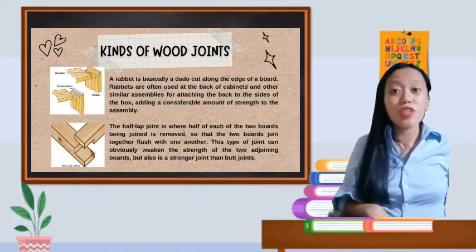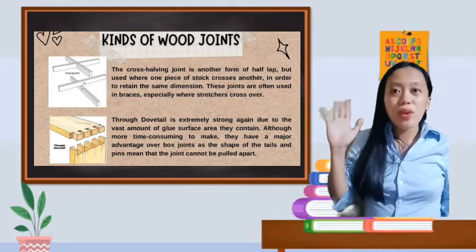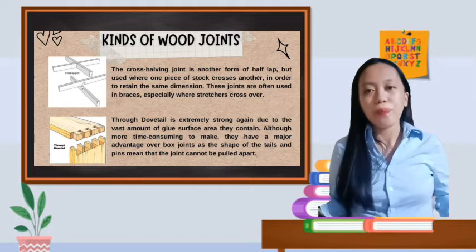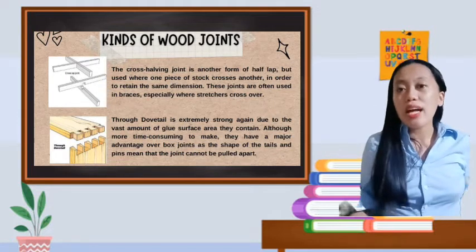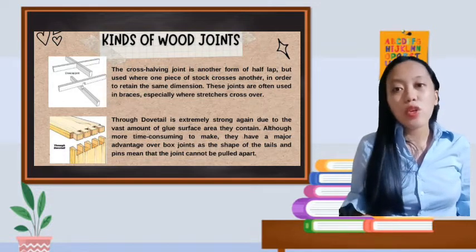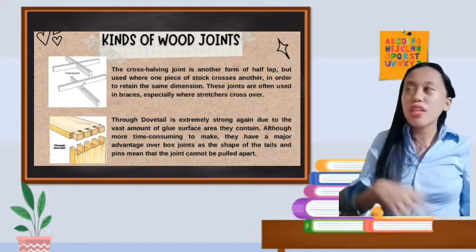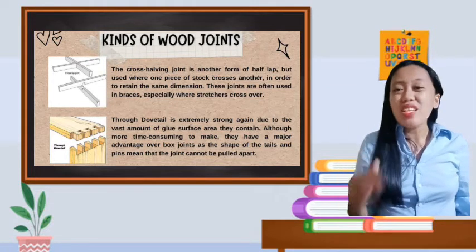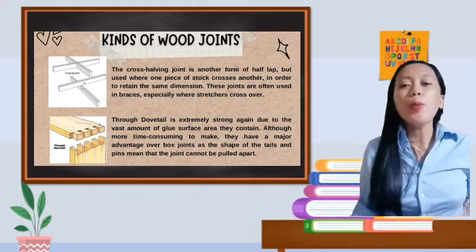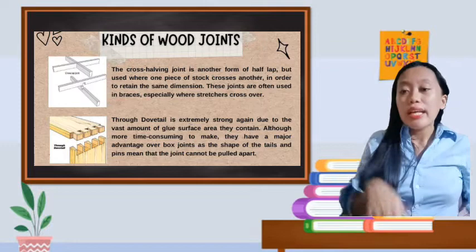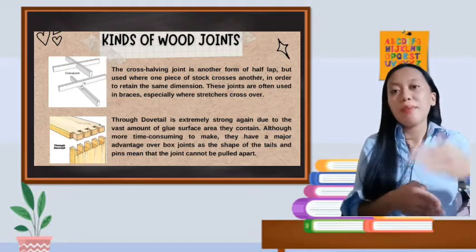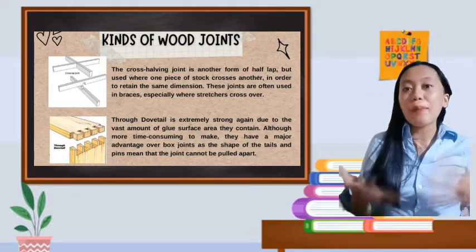Let's proceed to the cross-half-lap joint. There's any question? Are we clear? The cross-half-lap joint is another form of half-lap but used where one piece of stock crosses another in order to retain the same dimension. These joints are often used in braces, especially where stretchers cross over. If you notice in the cross-half joint, one wood and the second wood cross to create more dimensions that can be used.